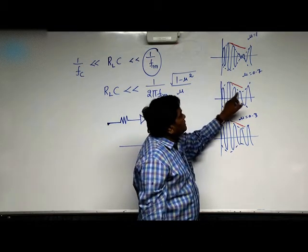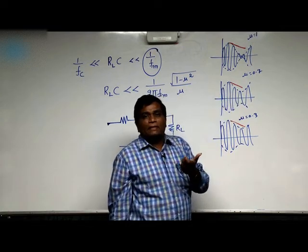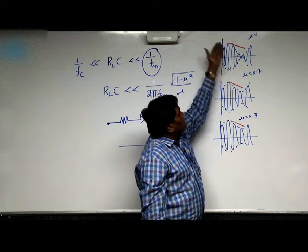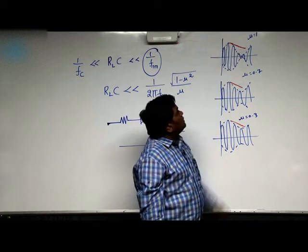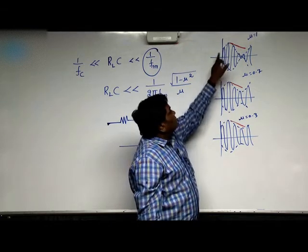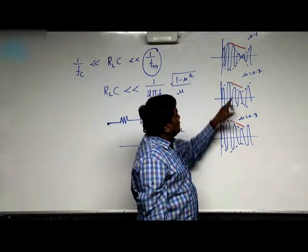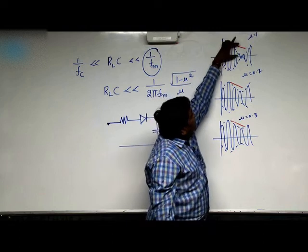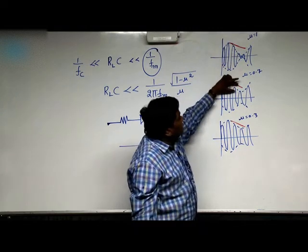No change in the message frequency. The parameter what we are changing is only the modulation index. When mu is 1, we are not at all in a position to track the envelope of the AM signal. But when mu is decreased, here problem is more severe but here problem is very less.